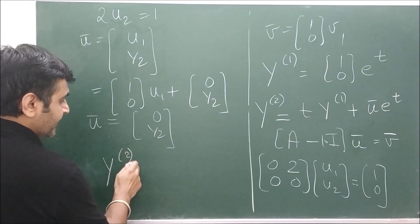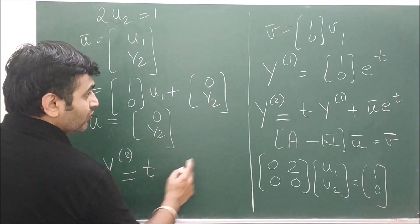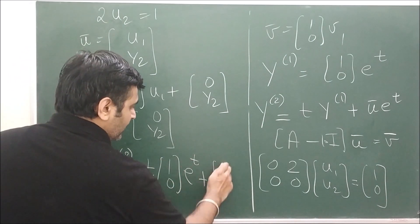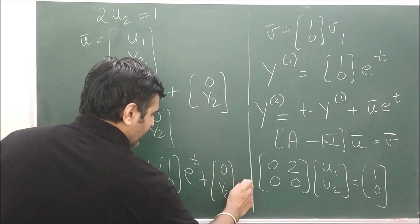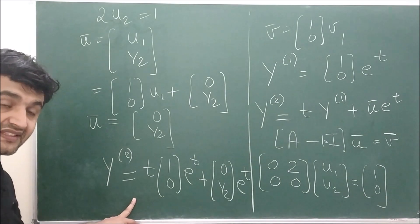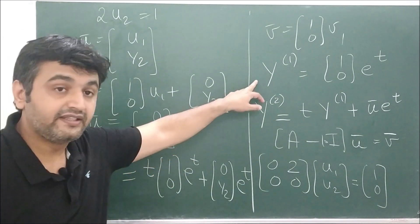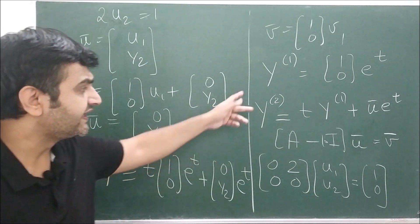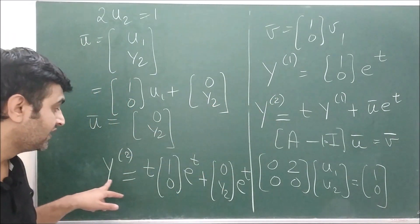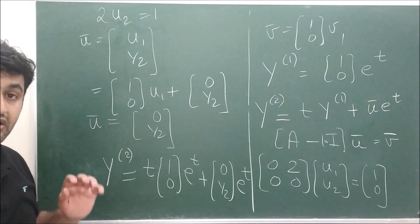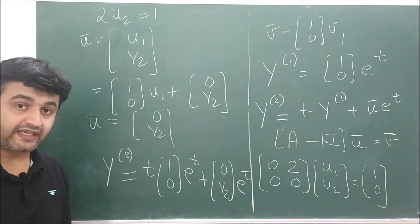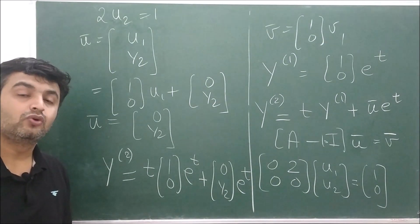Therefore the second linearly independent solution is y2 = t·[1, 0]ᵀ·e^t + [0, 1/2]ᵀ·e^t. These two solutions y1 and y2 are linearly independent — you can state this directly without verifying. The general solution is y = c1·y1 + c2·y2. This was the scenario for a 2×2 matrix where the eigenvalues repeat and you get only one independent eigenvector.